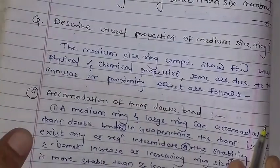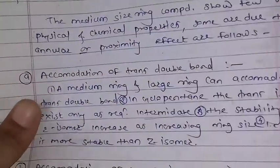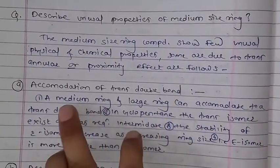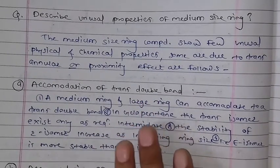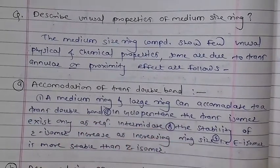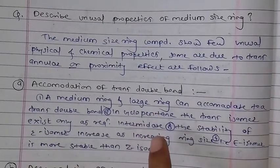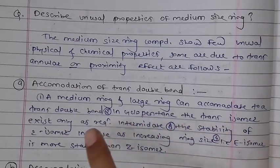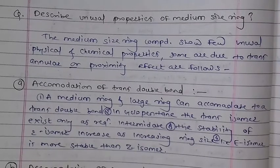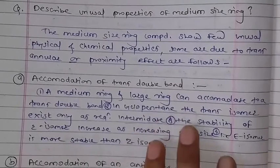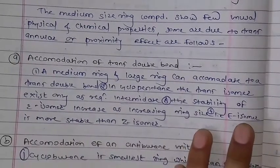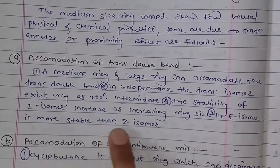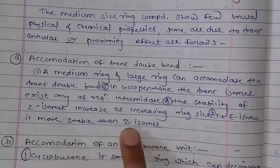First point: write down — accommodation of the trans double bond. This is the effect of medium size rings or large rings. The trans double bond in a cyclopentene ring — the same as the trans isomer — gains stability as ring size increases. As the ring size increases, stability increases. Which isomer is the most stable?